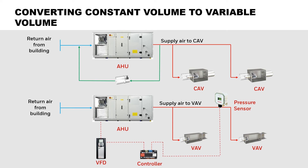The lower image is of a variable volume system. Here, the VFD controls the supply fan or system pump in conjunction with the dampers or valves. As the dampers and valves close, the system's pressure builds and the VFD slows down the fan or pump to maintain the system's design pressure. As the control dampers and valves open, the system's pressure declines and the VFDs speed up the fan or pump to maintain the system's design pressure. This allows all terminal devices such as diffusers, unit ventilators, etc. to receive the correct flow of air or water.